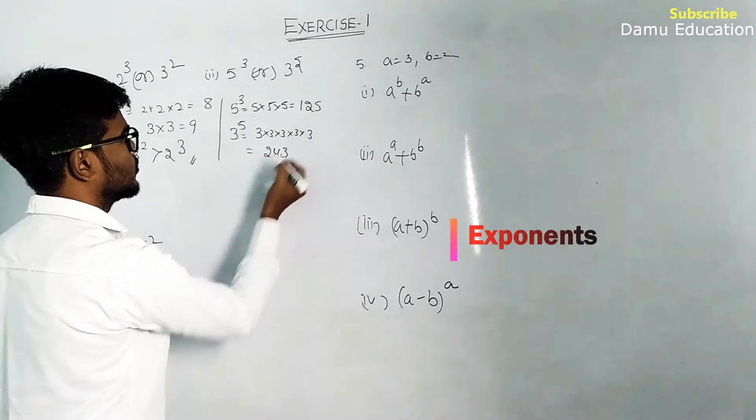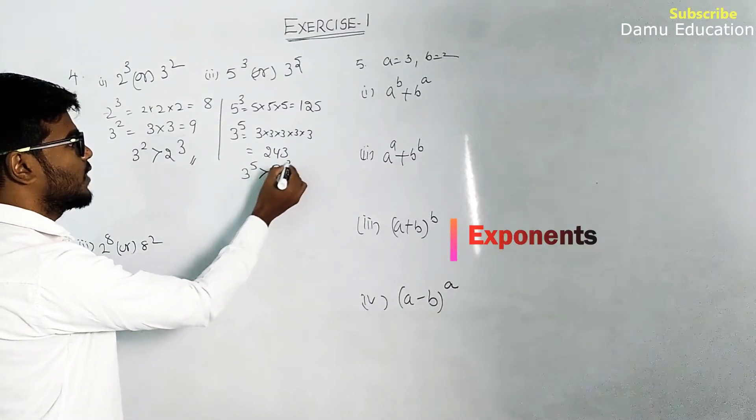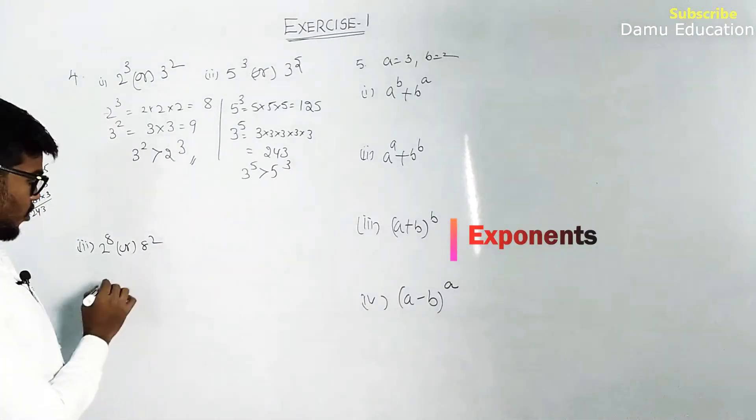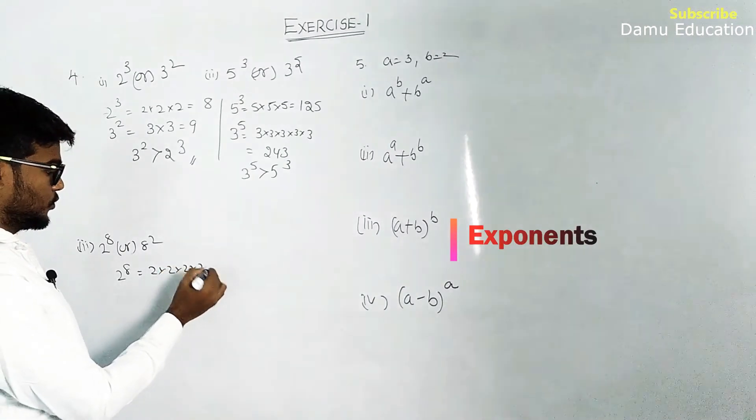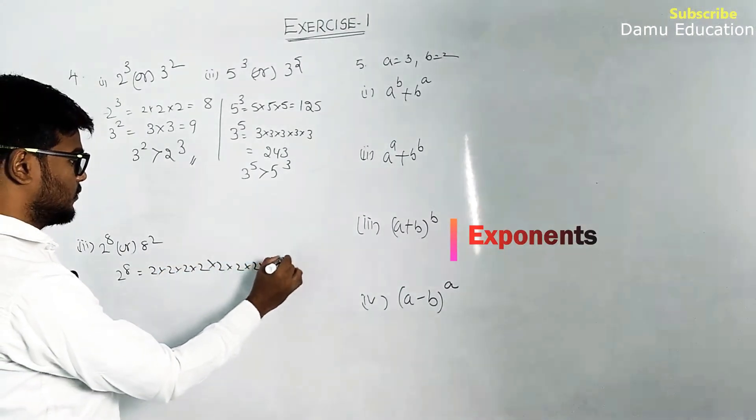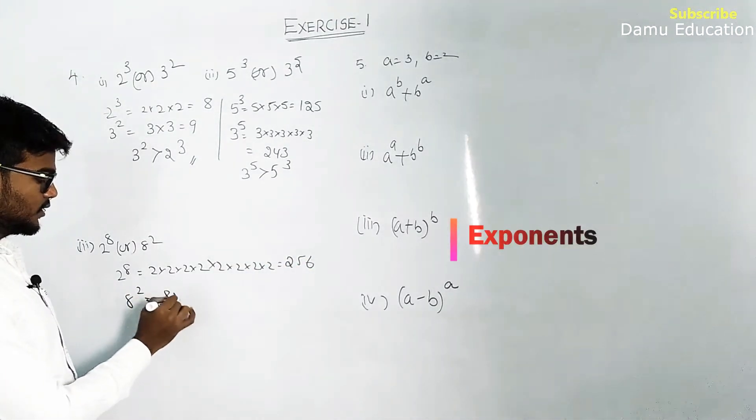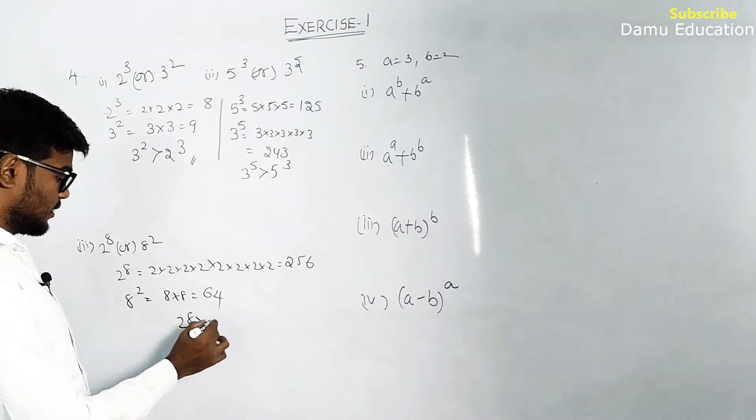So 3⁵ is greater than 5³. Next question: 2⁸ equals 2 × 2 × 2 × 2 × 2 × 2 × 2 × 2, that will equal 256. Then 8² equals 8 × 8, which is 64. So 2⁸ is greater than 8².